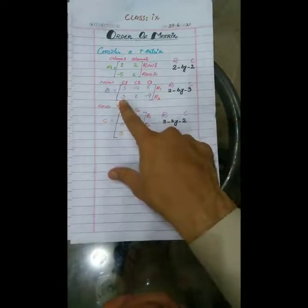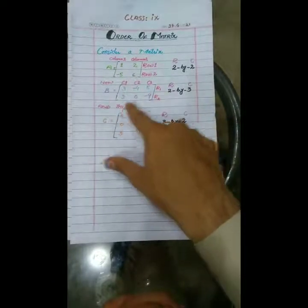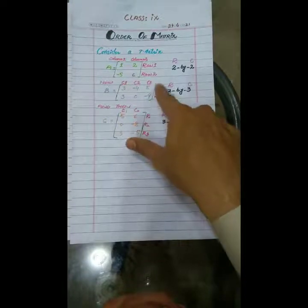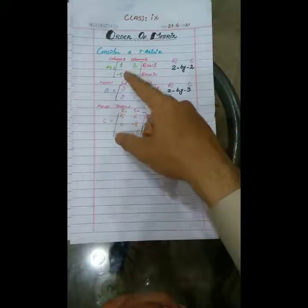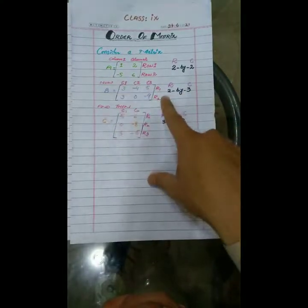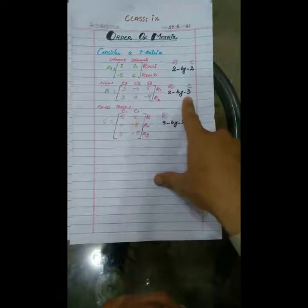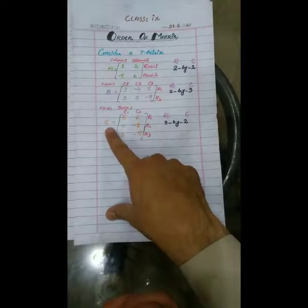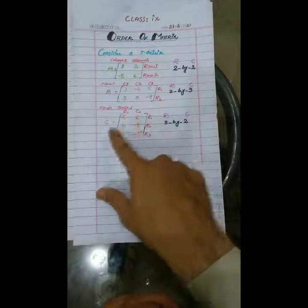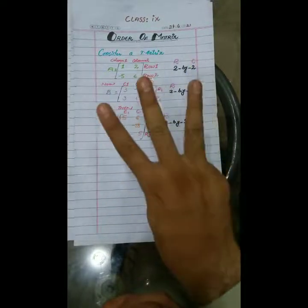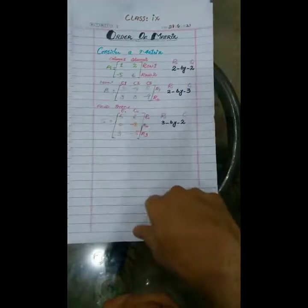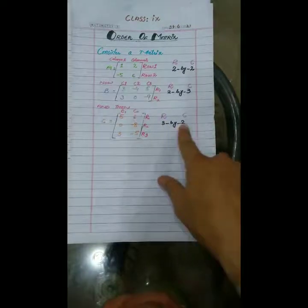Over to the next matrix. How many horizontal arrays are there? Two rows. How many columns are there? Three. So its order is two by three. Now, what is the order of the third matrix? How many rows are there? Three. How many columns are there? Two. So the order of this matrix is three by two.